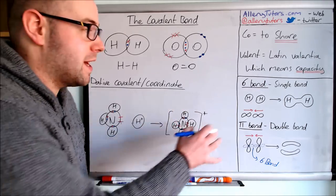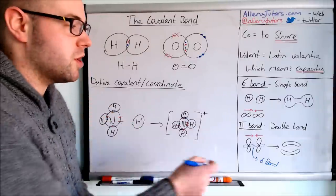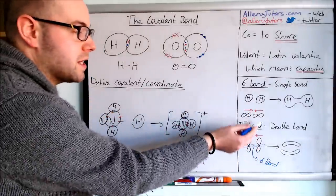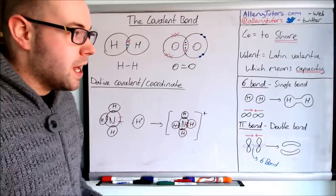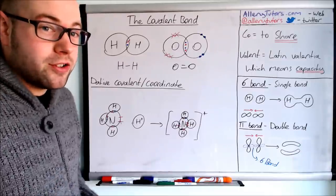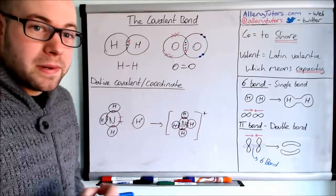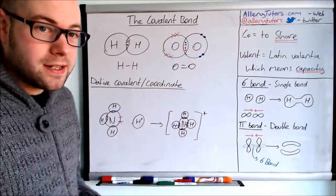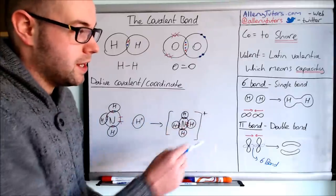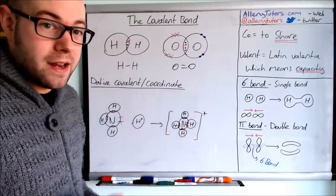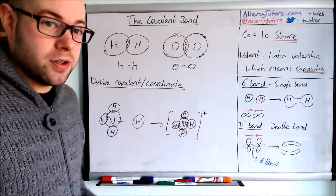As long as you understand sigma and pi bonds. Some exam boards want you to know how a pi bond and sigma bond work — check your specification. Some boards just want you to know that a sigma bond is a single bond and a pi bond relates to double bonds, particularly in topics like alkenes and bonding. Check the alkenes topic for pi bonds specifically.